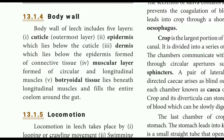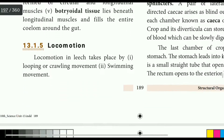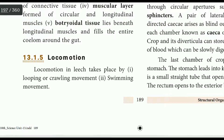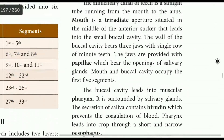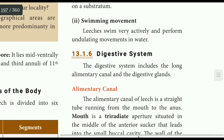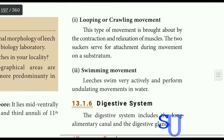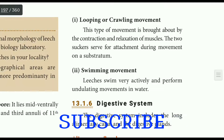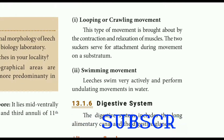Locomotion: the leech has two types of locomotion — looping or crawling, and swimming. In looping or crawling, the muscles relax and contract to move to the next place on a solid surface. Swimming is used to travel through water.